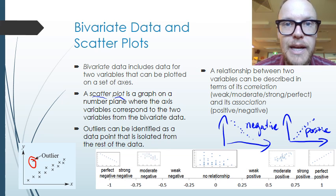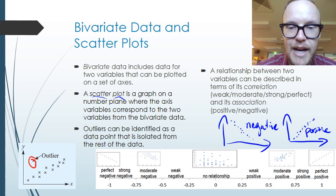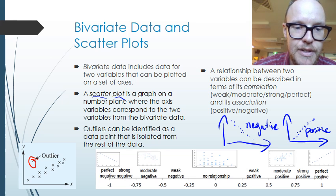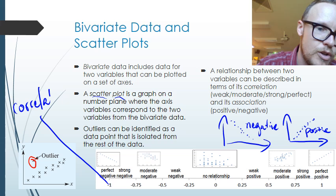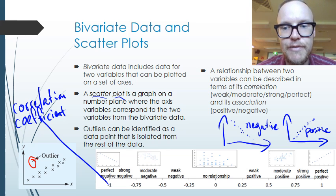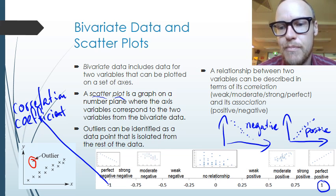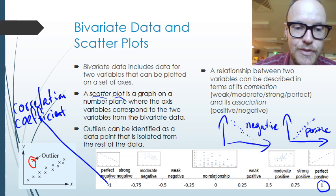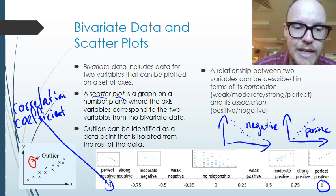A negative correlation means the variables are inversely proportional, while a positive correlation means they are directly proportional. There is a scale of correlation described by the correlation coefficient. A correlation of positive one means a perfect positive relationship — all data points are perfectly aligned and increasing. A correlation of negative one is a perfect negative correlation — all data points line up in a straight line moving downward.